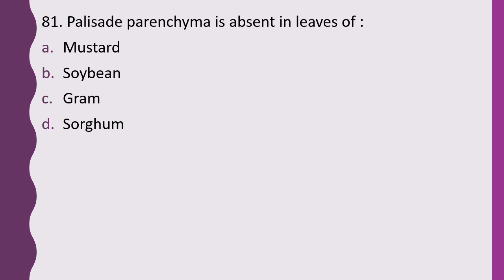Question 81. Palisade parenchyma is absent in leaves of: mustard, soya bean, gram, or sorghum. The correct answer is option D, sorghum.